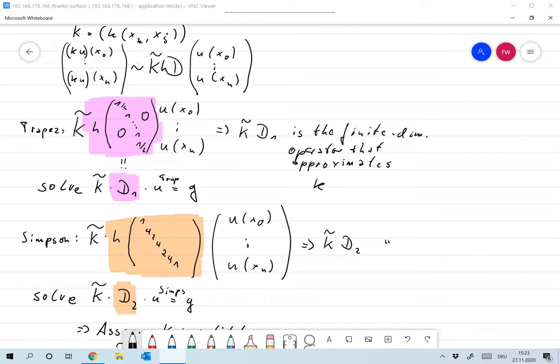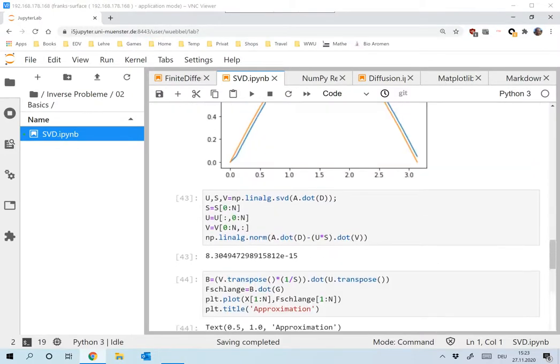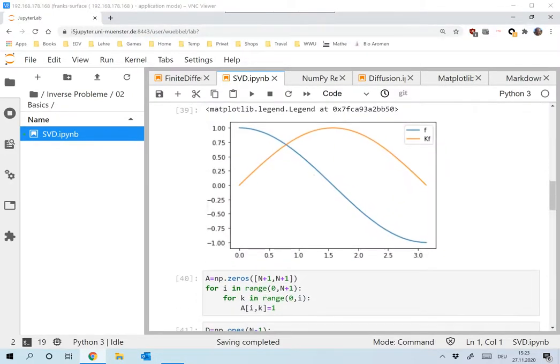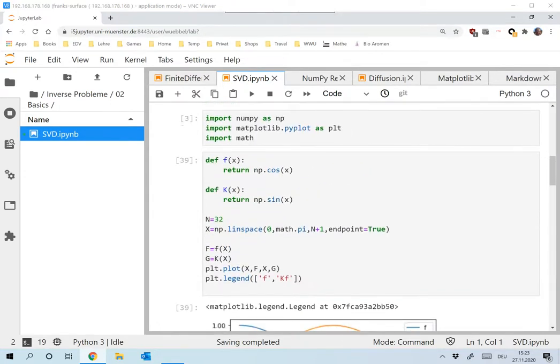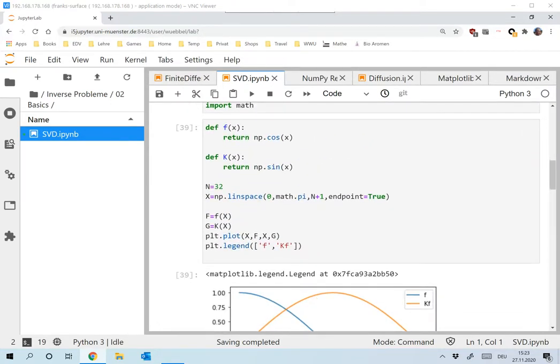Now I've implemented this and let me show you what came out. We have a function f. The integrating function is k(x), so the K operator is calculating the integrating function. If we take for u the cosine, then the result in function space is the sine.